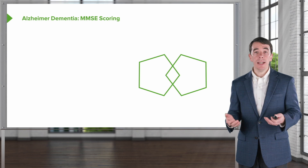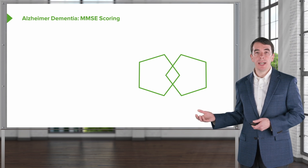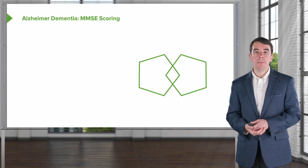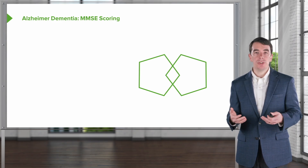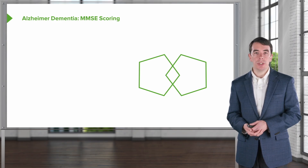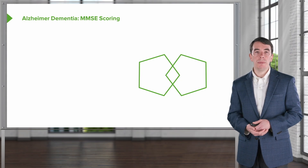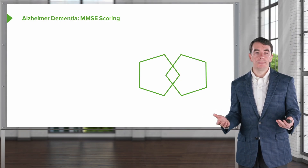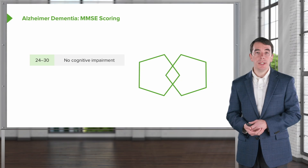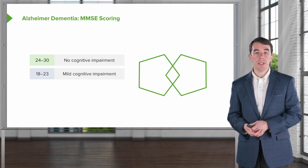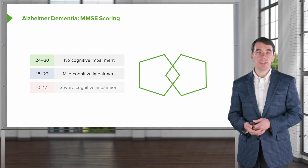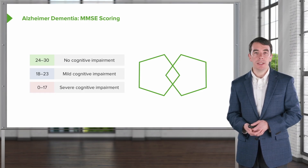The last domain is visuospatial tasks. You can see the interleaving pentagons drawn here, and the patient is asked to reproduce this image. In terms of scoring, the MMSE is scored on a scale of 30. Scores of 24 to 30 indicate no cognitive impairment, 18 to 23 indicates mild cognitive impairment, and a score less than 17 indicates more severe cognitive impairment.